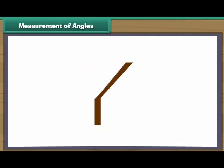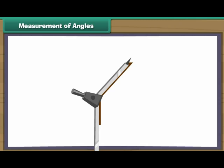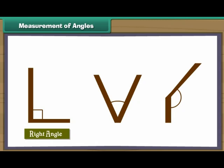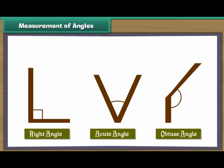Now consider the letter K of the English alphabet — let us modify it. Place the divider on the figure so that one of its arms and common point coincide with one of the arms and common point of the figure. The other arm of the divider lies to the right of the other arm of the figure, meaning the figure makes an angle greater than the right angle — that is an obtuse angle. Therefore, we can measure a right angle, an acute angle, and an obtuse angle with the help of a divider.